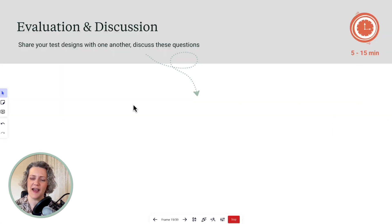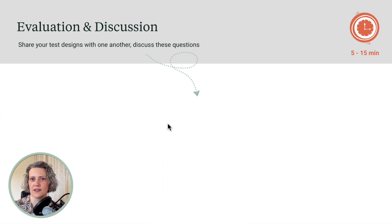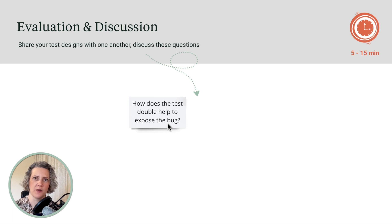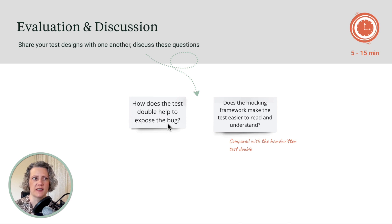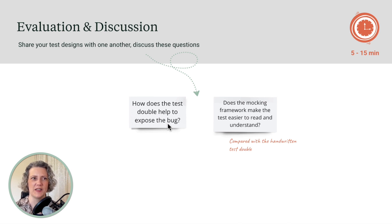Now I've got a couple of discussion questions for you. Share your code with one another and show what it looks like when your tests fail. When you can see each other's code and implementations, answer these questions: How does the test double help you to expose the bug — what role is it playing? And does the mocking framework version of the test make it easier to understand compared with the handwritten test double? Have a discussion in your team — I don't know what the right answer is, but I hope you'll come to some conclusions.